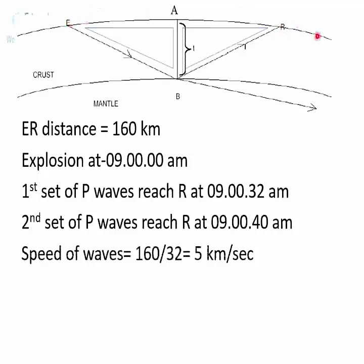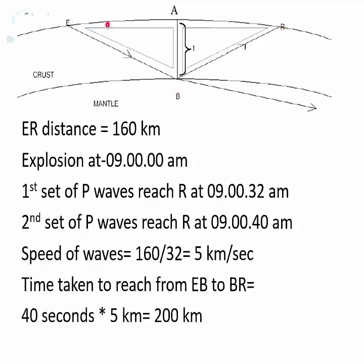We know the ground distance between E and R is 160 km. So 160 km was traveled by P waves in 32 seconds, meaning the speed is 5 km per second. The same speed applies to the other set of P waves as well. So if the time taken by the second set of P waves to reach the recording station is 40 seconds, the total distance E-B-R will be 200 km.